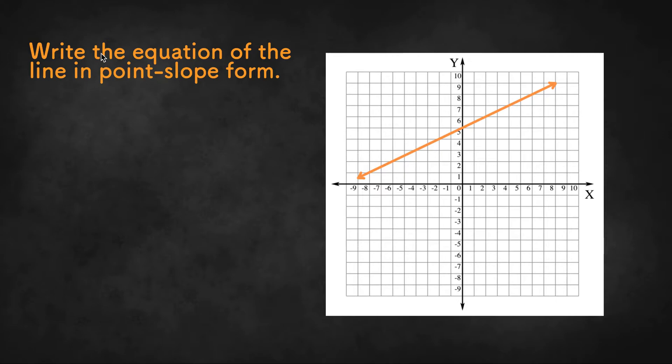So first of all let's write the equation of point-slope form. Point-slope form is y minus y1 equals m times x minus x1.